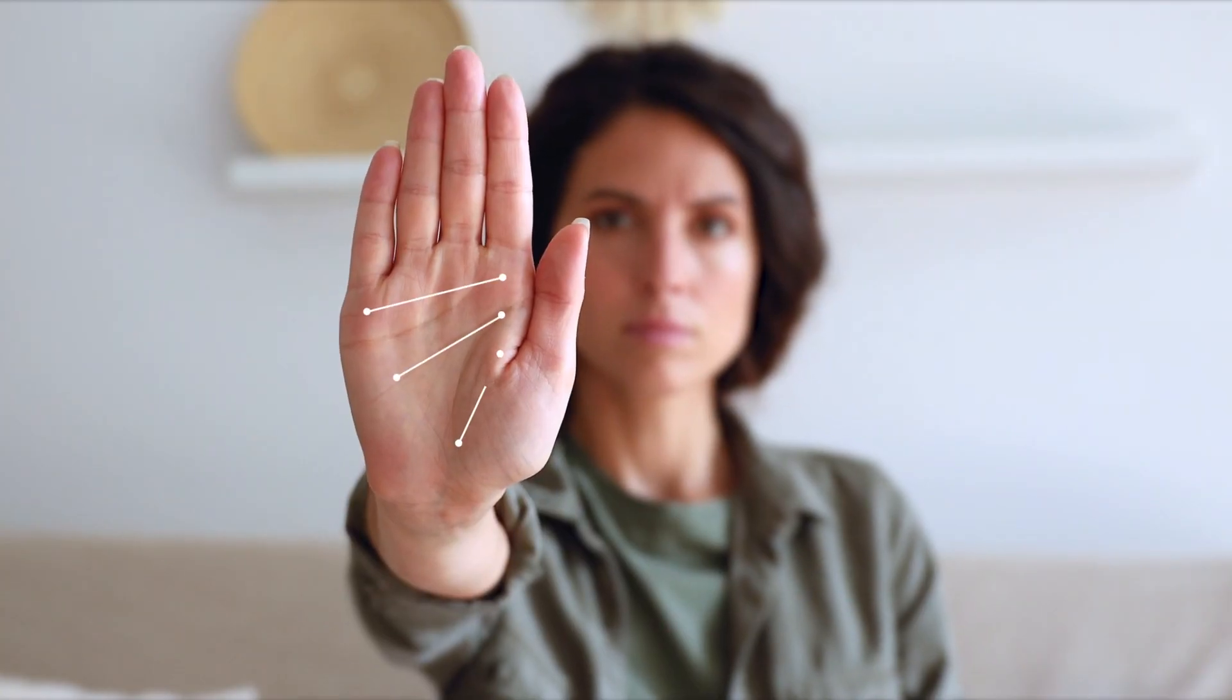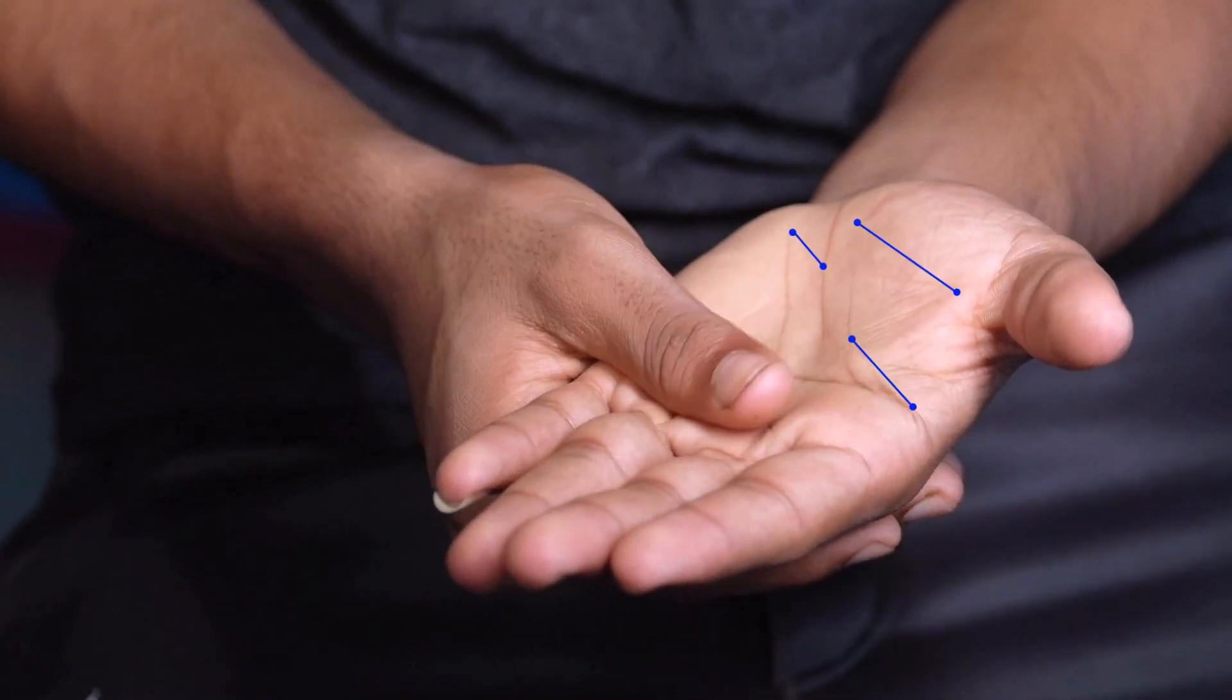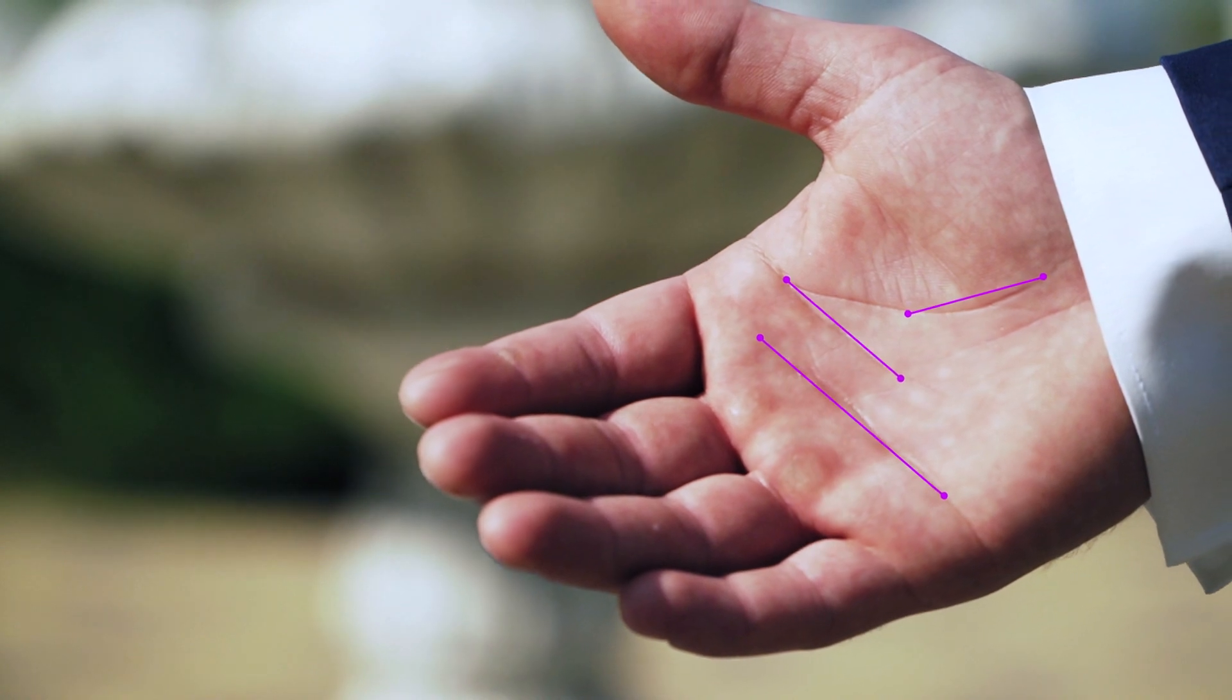The second criteria that was very important for us is that we wanted the biometric to be private. When you look at a palm, you can't ascertain a person's physical identity by just looking at a picture of their palm. Unlike face or even your voice, which can give you clues about the person's identity, a picture of your palm doesn't give you a clue as to who the person is.